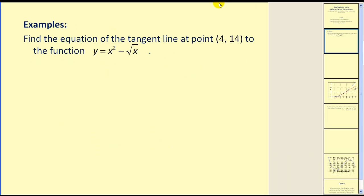Let's take a look at an example. Find the equation of the tangent line at the point (4, 14) to the function y equals x squared minus the square root of x.